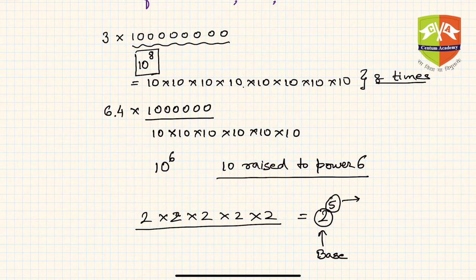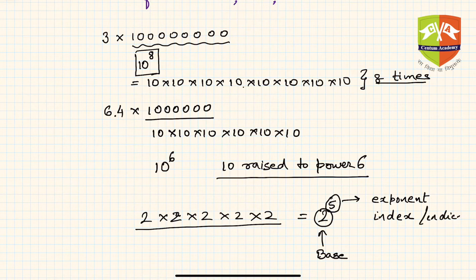Here 2 is called the base, and 5 has multiple names: it can be called exponent, it can also be called index (whose plural is indices), and third is power. So you can call it by any name.